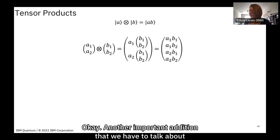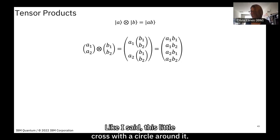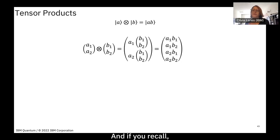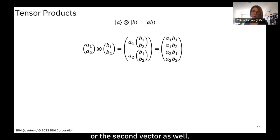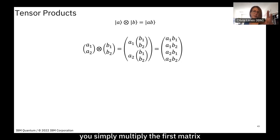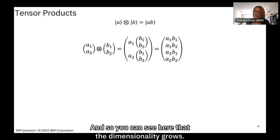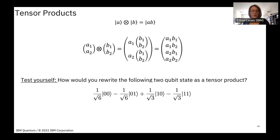Another important operation is the tensor product, written with a circle-cross symbol. I briefly showed this earlier when discussing entangled states. The tensor product works by multiplying each element of the first matrix or vector by the entire second matrix or vector. As a result, the dimensionality grows — doubling here because we have two column vectors each of size 2×1.